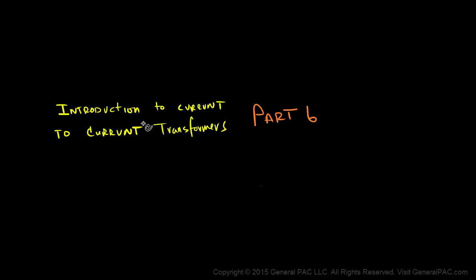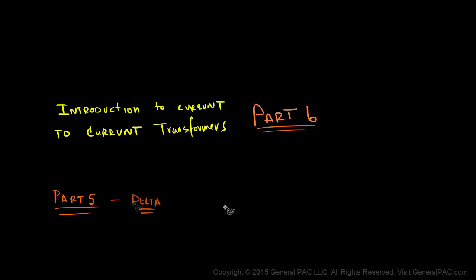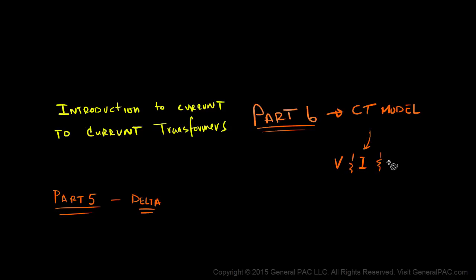Introduction to Current Transformers Part 6. In Part 5, we connected three CTs in delta and showed how the currents would circulate for the delta connection. In Part 6, we're going to draw the current transformer model and show the voltages, currents, and impedances that are associated with the CT model.